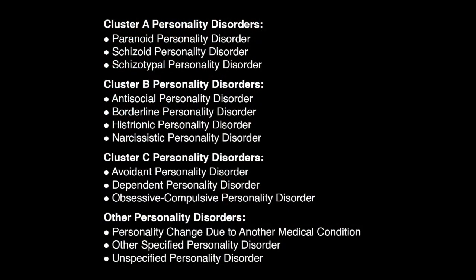The following personality disorders are included in the DSM-5: Paranoid personality disorder — a pattern of distrust and suspiciousness such that others' motives are interpreted as malevolent. Schizoid personality disorder — a pattern of detachment from social relationships and a restricted range of emotional expression. Schizotypal personality disorder — a pattern of acute discomfort in close relationships, cognitive or perceptual distortions, and eccentricities of behavior. Antisocial personality disorder — a pattern of disregard for and violation of the rights of others. Borderline personality disorder — a pattern of instability in interpersonal relationships, self-image and affect, as well as marked impulsivity.